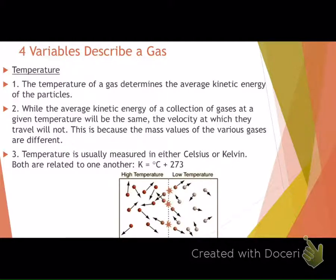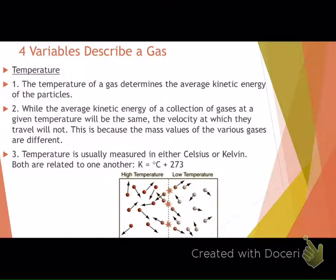Typically when we describe gases, we talk about them in Celsius or Kelvin. To convert to Kelvin, you take your degrees Celsius and add 273. We use the Kelvin scale because the lowest possible temperature is zero — there are no negative temperatures in Kelvin, which makes our equations work out easier. At higher temperatures, particles move faster, shown by longer vector arrows, while at lower temperatures the vector arrows are shorter.